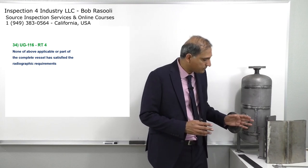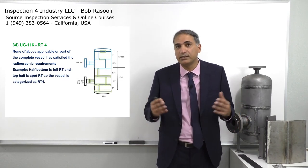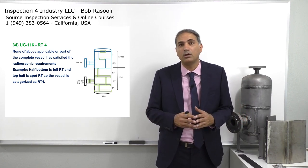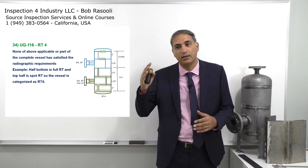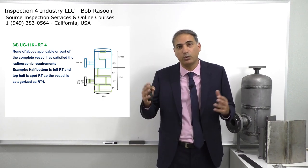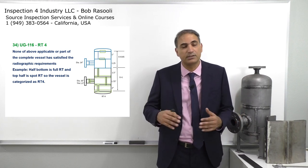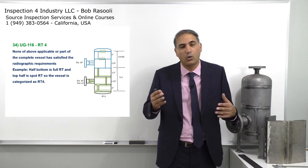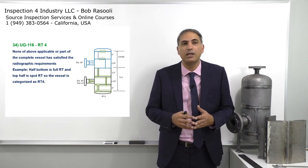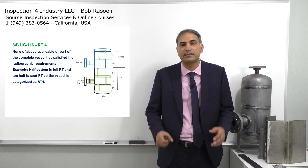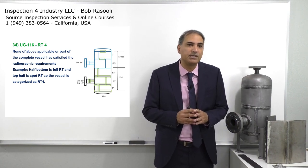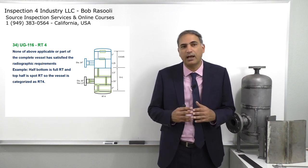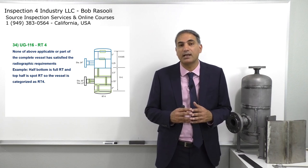So either it's no radiography — we don't do radiography at all — or we perform radiography but it's not RT1 (full radiography), it's not RT2, and it's not RT3. It's something else, or a combination of them. We name it RT4. An example of RT4 shown on screen is a vessel where the bottom half is full RT and the top half is spot RT, so the vessel is categorized as RT4.